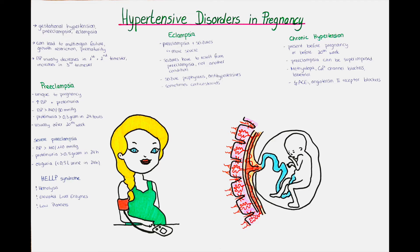In pre-eclampsia, the proteinuria is due to impaired integrity and function of the glomerular filtration barrier and a decreased tubular filtration capacity of the proteins, leading to more protein excretion into the urine. To be considered proteinuria in pre-eclampsia, the levels have to be at least 300 microgram, or 0.3 gram, in 24 hours.